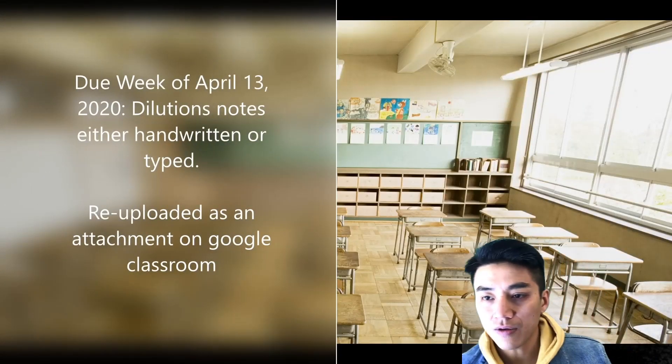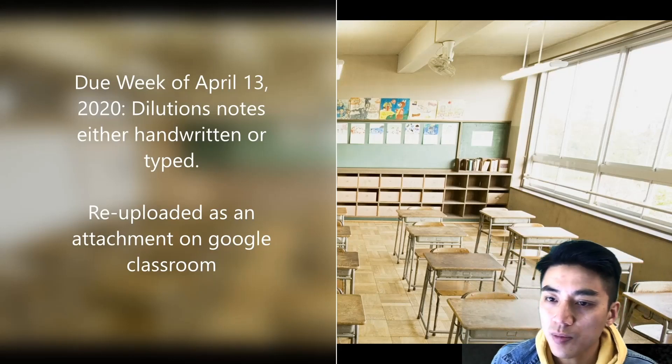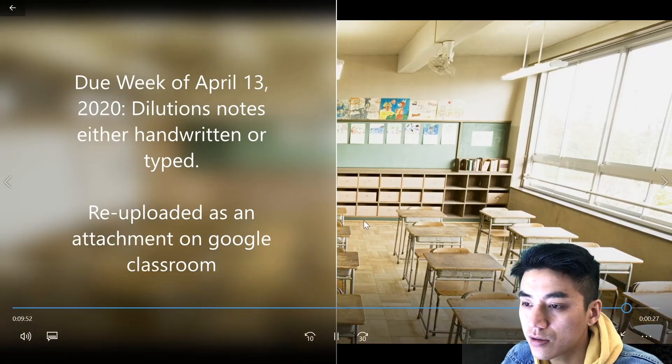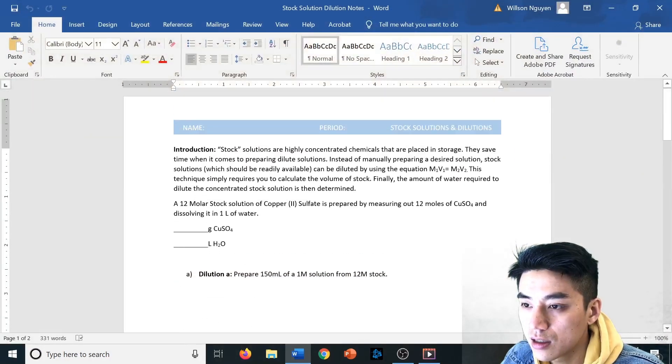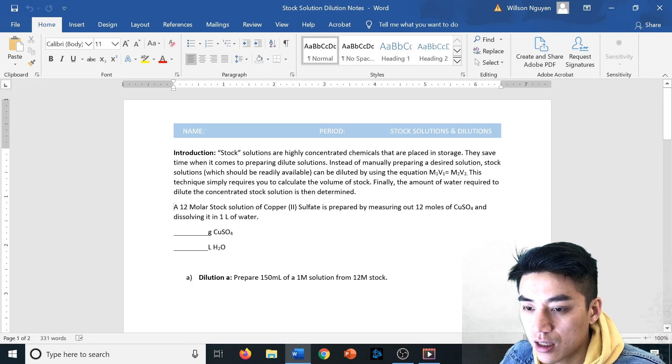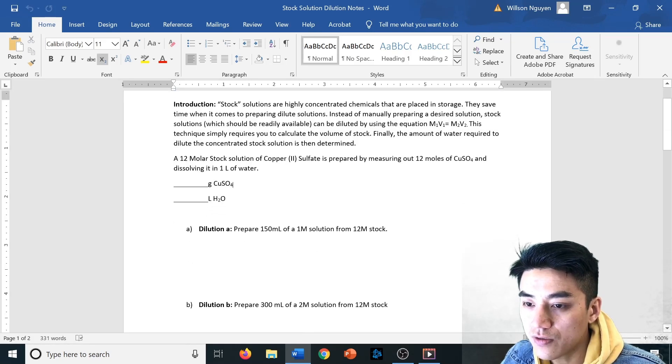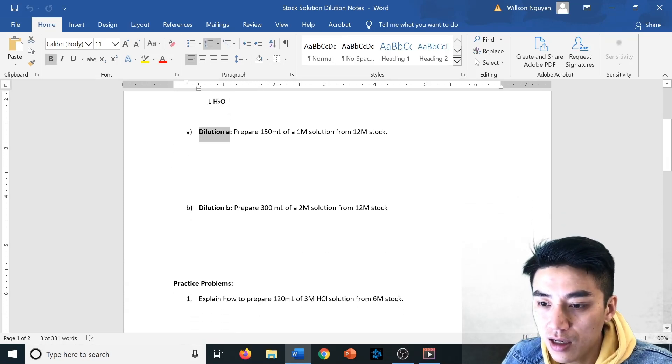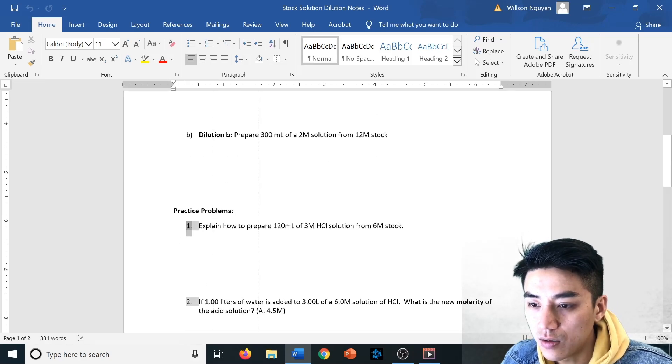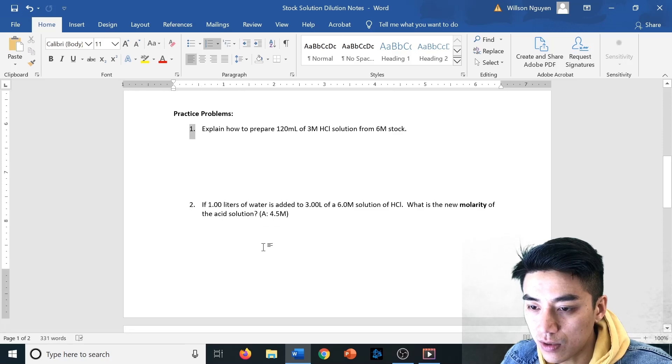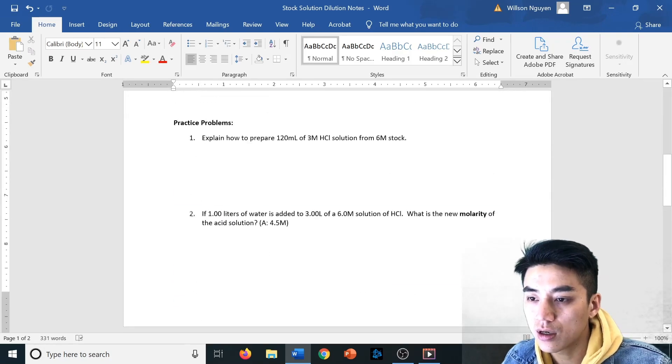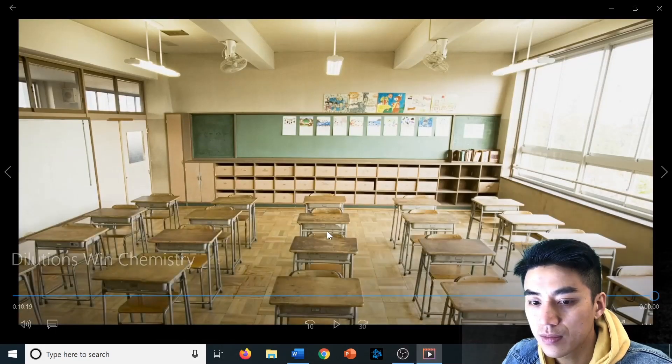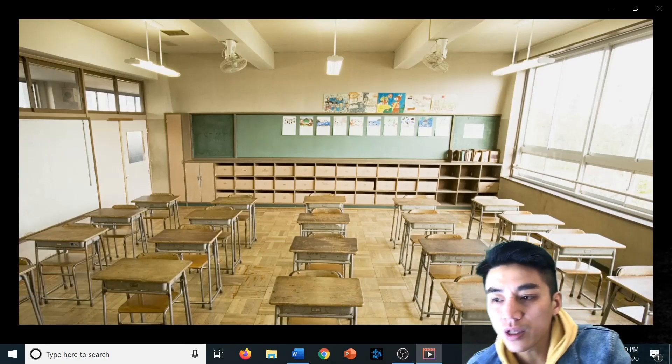All right, so that's it. So you have your notes that are due the week of April the 13th. Make sure it's either handwritten or typed, and then you just re-upload that as an attachment on Google Classroom. I'll show you what the notes look like. It's this right here. So I gave a short introduction. I told you how much the copper sulfate and how much water you had to use for the stock solution. And then we went over dilution A, dilution B, and I did practice problem one. So that just leaves you with problems two through six. Okay, so show your work. Write it down by hand and type it out, and then re-upload that as an attachment on School Loop. All right, thanks for listening. And we'll learn some more next time on Win Chemistry.